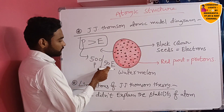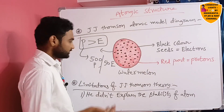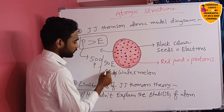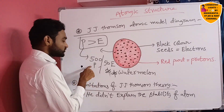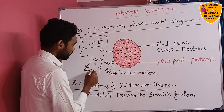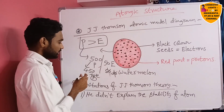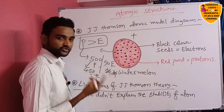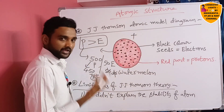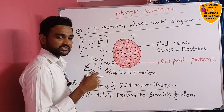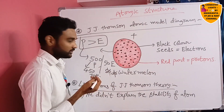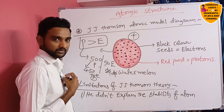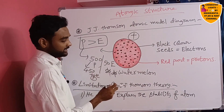The 50 negative charges can neutralize only 50 of the positive charges. After that neutralization, 450 positive charges still remain — meaning the atom acquires an overall positive charge. But we know very well that an atom is electrically neutral; it has neither positive nor negative charge. So according to this argument, J.J. Thompson's theory failed — he did not explain the stability of the atom.